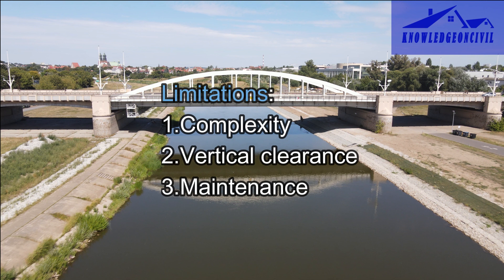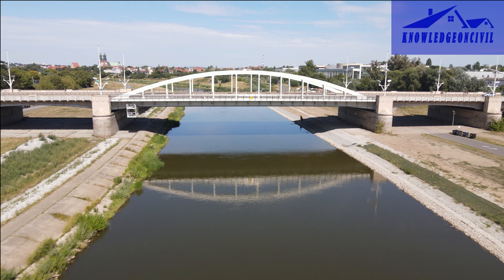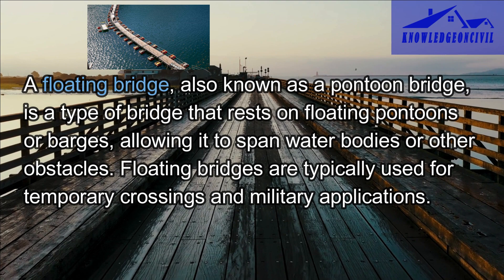The design and construction of tied arch bridges can be more complex and costly than simpler bridge types. The height of the arch may limit vertical clearance for boats or ships passing beneath. Depending on the materials used, they may require maintenance to prevent corrosion. A tied arch bridge is identified by its curved arch as the primary load-bearing component, with diagonal members or tie rods offering added support. These bridges are appreciated for their strength, stability, and beautiful design, making them suitable for moderate to long spans, but they can be complicated and expensive to design, construct, and maintain.